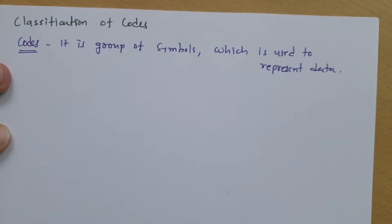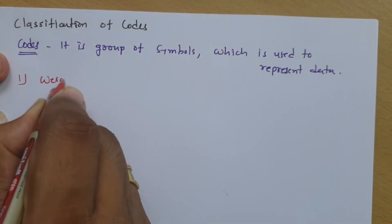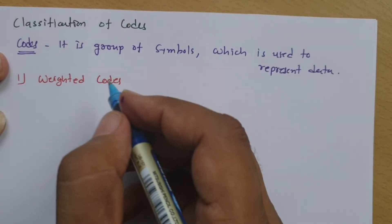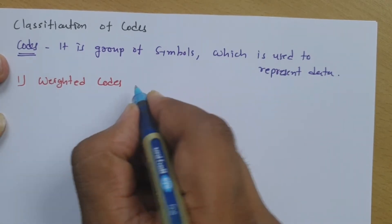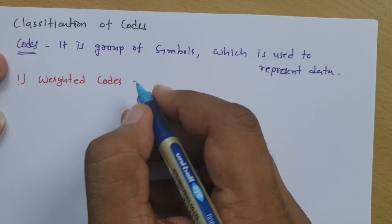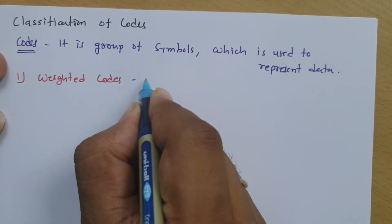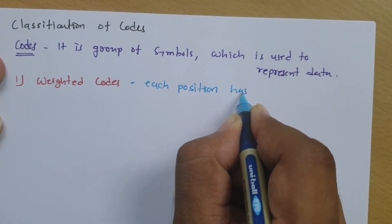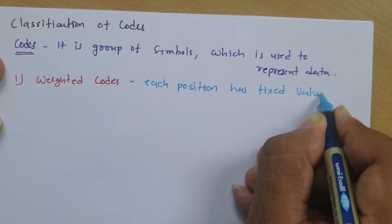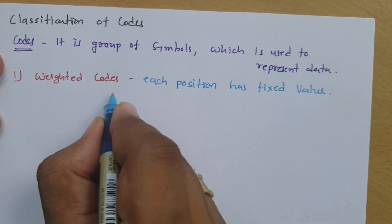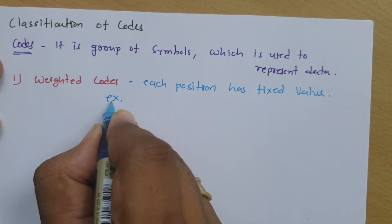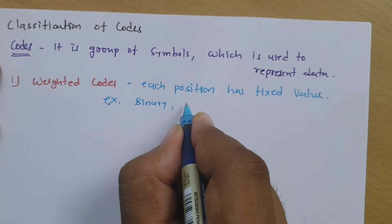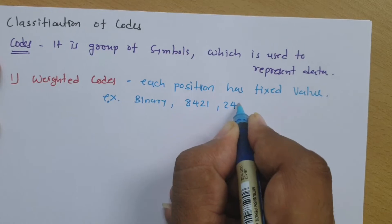In different types of codes, the first category is weightage code. In weightage code, each position has a fixed value of data. For example, binary code is a weightage code — it has fixed values with respect to position. This is also called 8421 code or 2421 code.